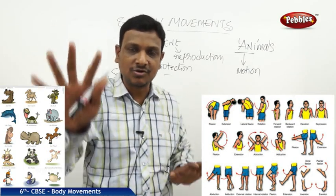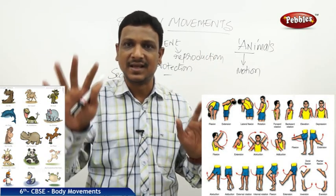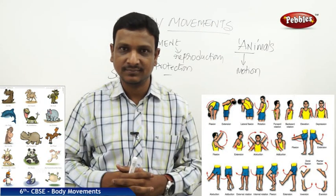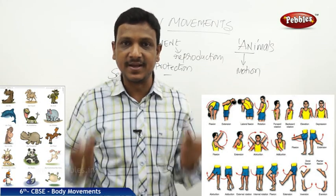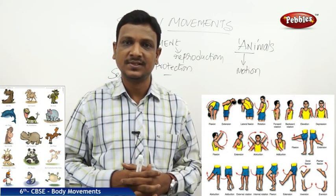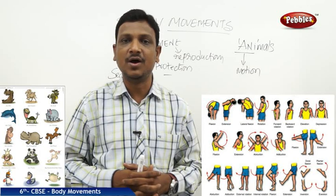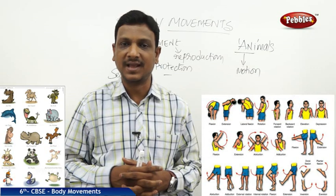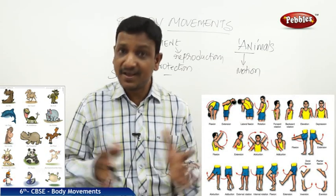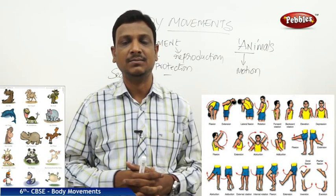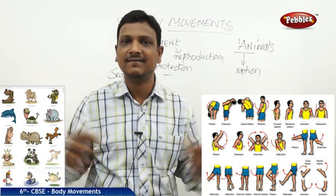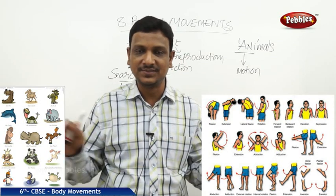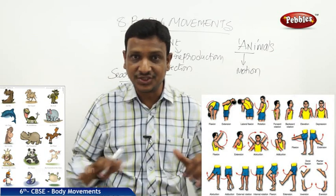A lizard crawls — it uses its hands and puts its stomach on the ground and slowly crawls. A kangaroo hops. A fish swims with its fins. A bird flies with its wings. A cockroach crawls and also flies with its wings. Frogs jump and hop.